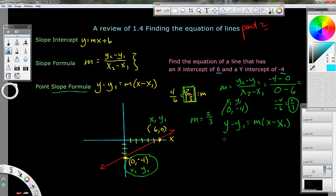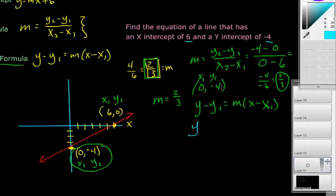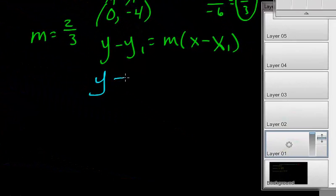Okay, so we start plugging everything in. So, the variables on this are the y1, the m, and the x1. This y and this x stays the same. So, it's going to be y and then minus y1. So, that's going to be minus negative 4. So, I'm going to go like this. Watch. Minus negative 4.